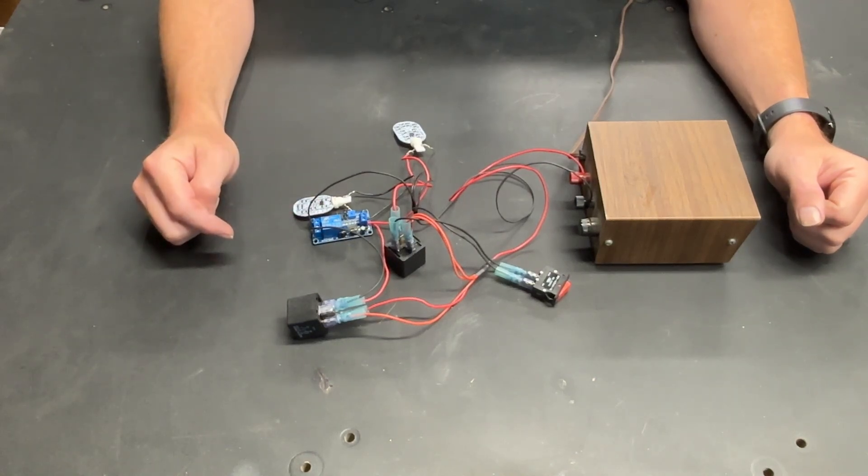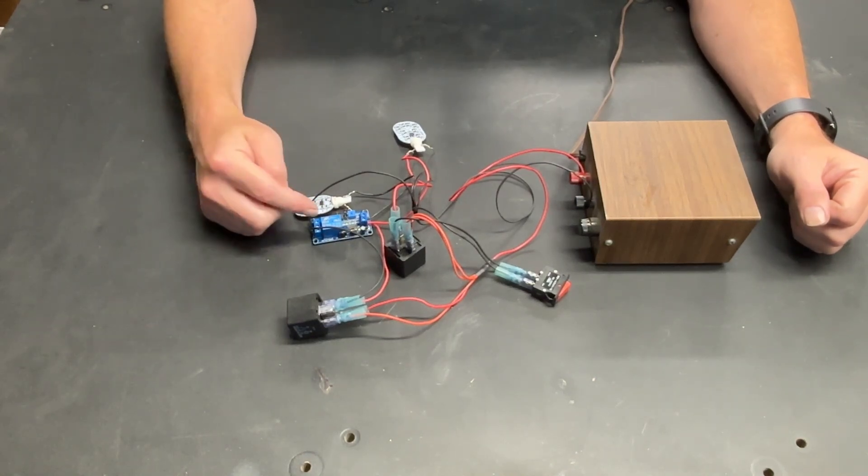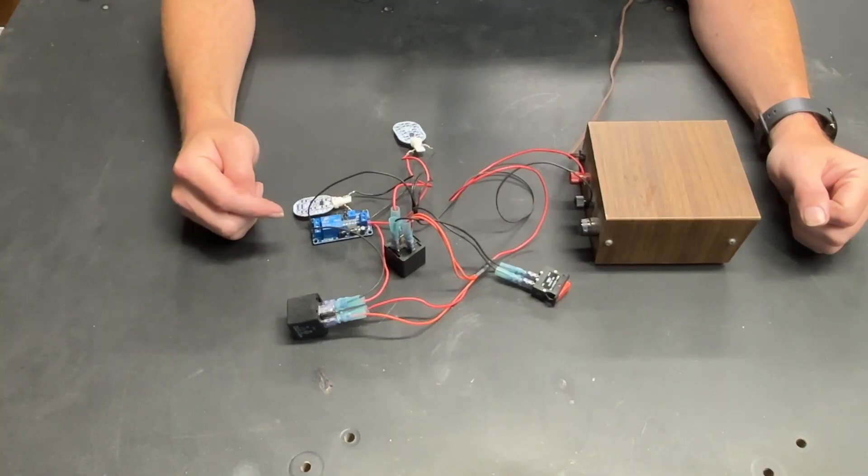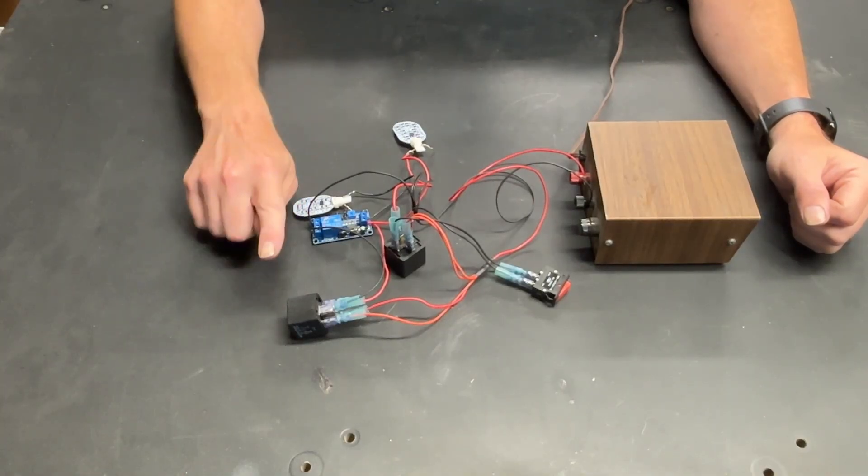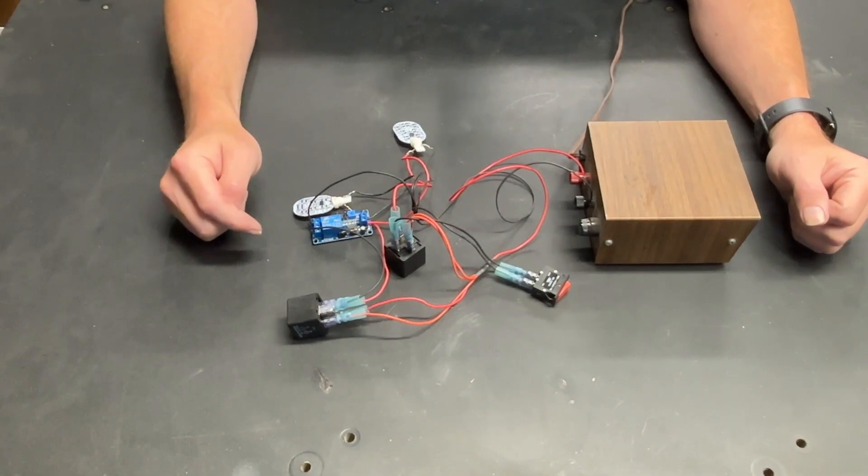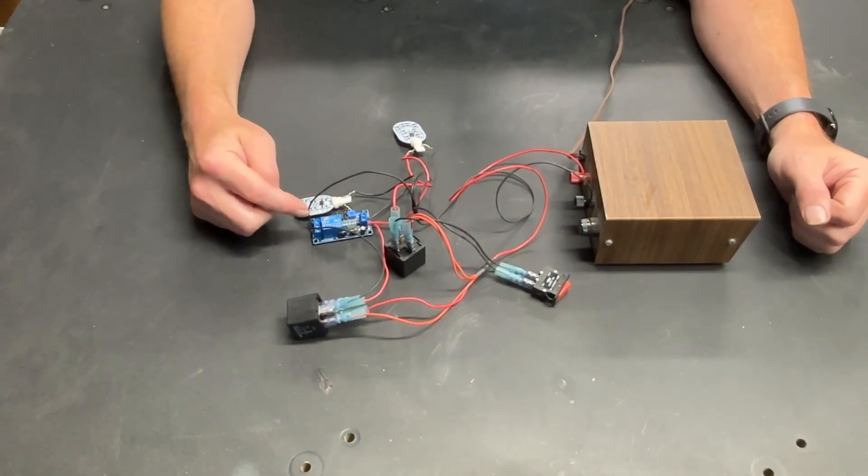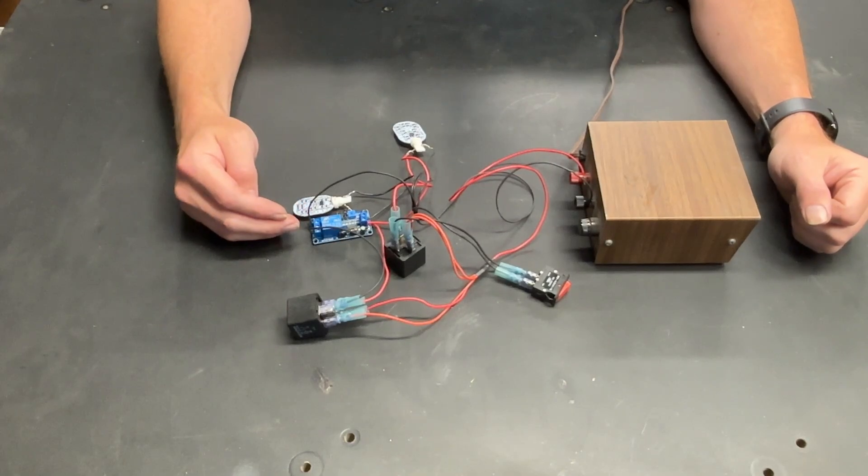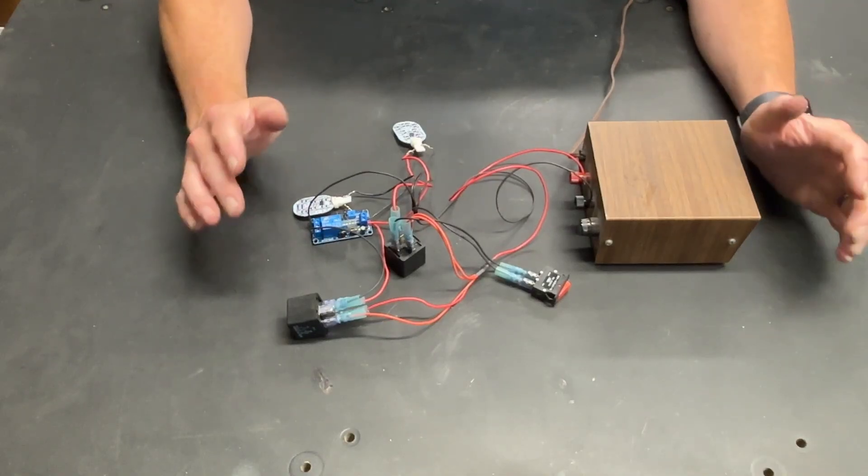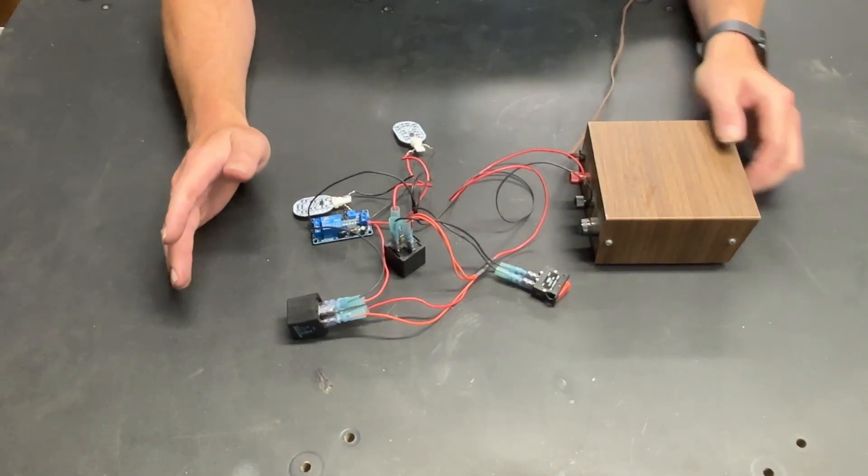That is a timed relay. This is an inexpensive unit. They sell them on Amazon for not a lot of money. And I'm going to put a link down in the description if you choose to set something up like this. This is configurable to a whole bunch of different time settings and allows you to have a delay to trigger your second relay. So, basically, how the whole system works.